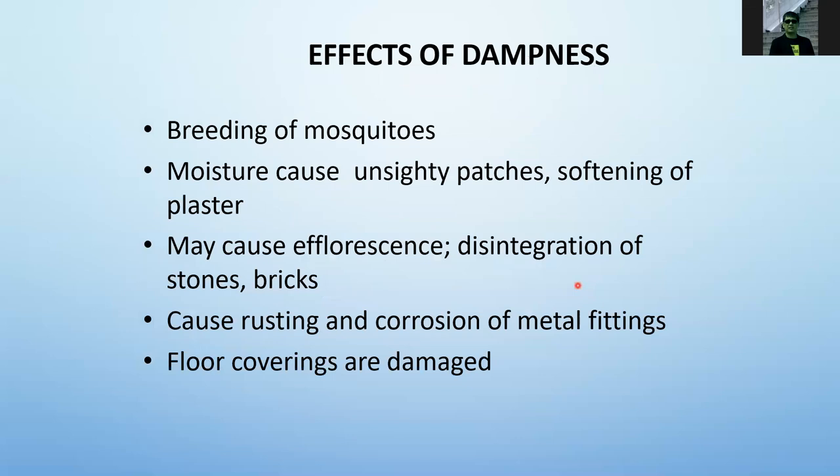Effects of dampness include breeding of mosquitoes, unsightly moisture patches, softening of plaster, blistering of paint and plaster, efflorescence, and disintegration of stones and brick. The structure can disintegrate and the concrete can pulverize, causing structural problems. Dampness causes rusting and corrosion of metal fittings, and damages floor coverings — carpets will be damaged, and water marks can appear underneath tiles because of dampness in the slab.